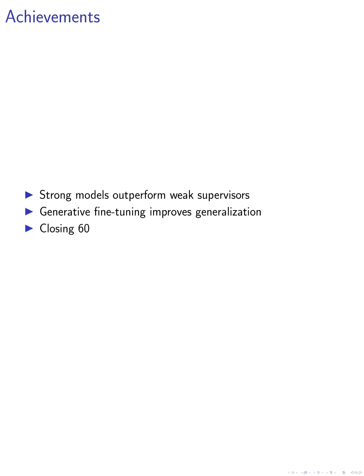Our achievements include finding that in most settings, strong student models trained with weak supervision outperformed their weak supervisors, recovering more than 20% of the performance gap between the weak and strong ceiling models. We have also shown that generative fine-tuning on relevant data can improve weak-to-strong generalization in the reward modeling setting by approximately 10 to 20%. Furthermore, we demonstrated that fine-tuning the strong model on weak labels and then linear probing with ground truth labels can improve weak-to-strong generalization on NLP tasks, closing 60% of the gap between ground truth linear probing and fine-tuning.